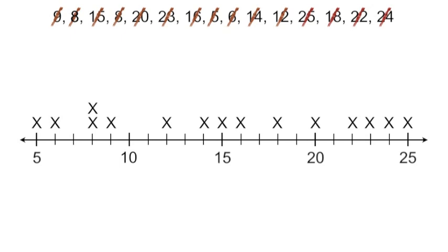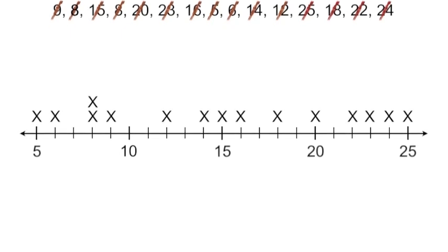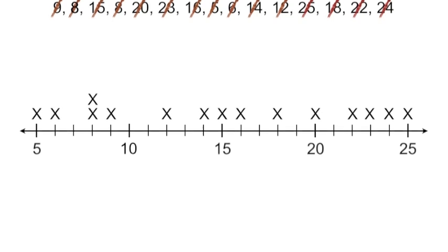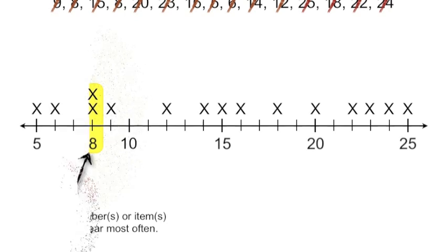And once we have our line plot constructed, it's very easy to find the mode, and of course that is the number that comes up the most. So we can see that number 8 is our mode.